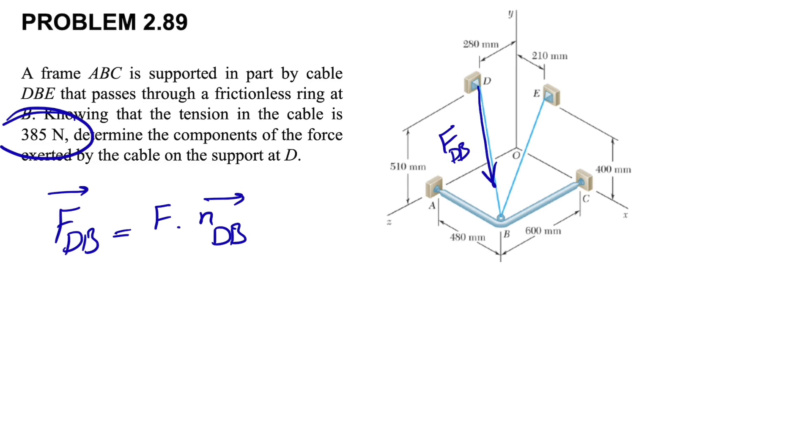First of all we have to know the tension in the cable, which we call F. From the question we know it's 385. And we have to find the unit vector DB.